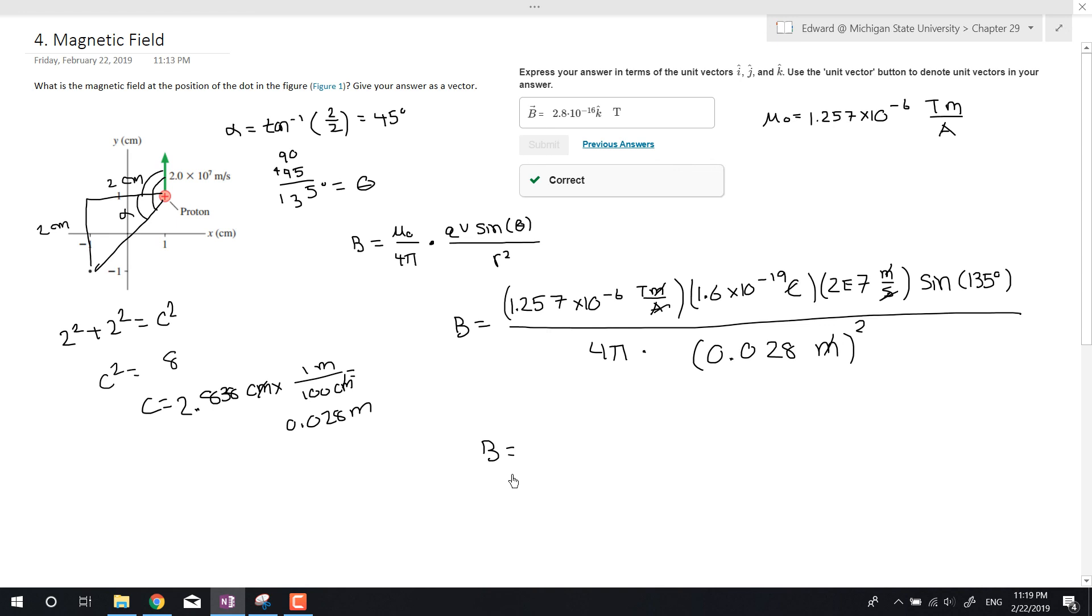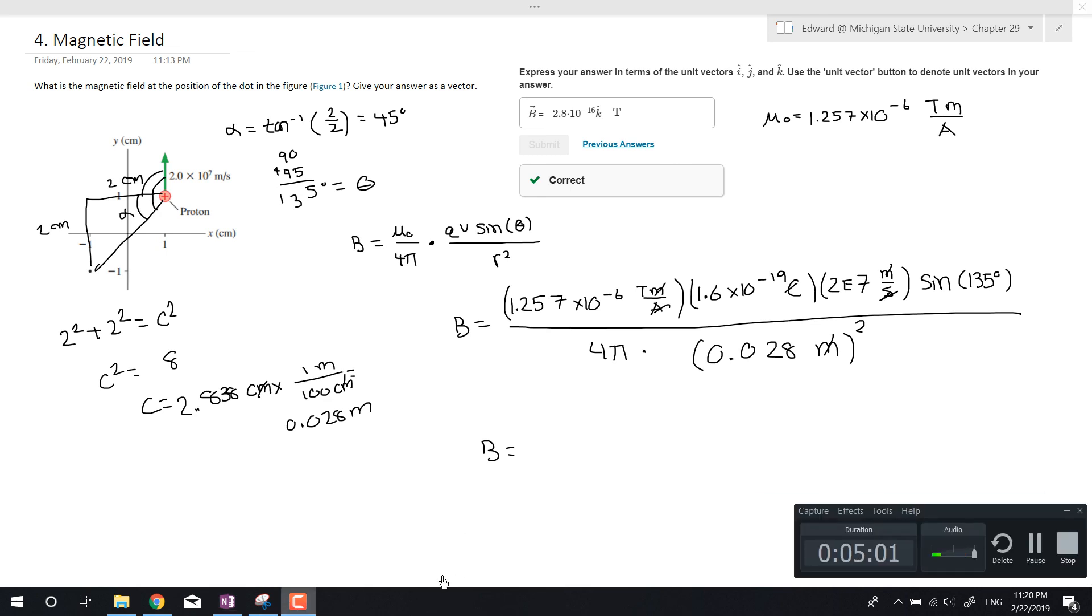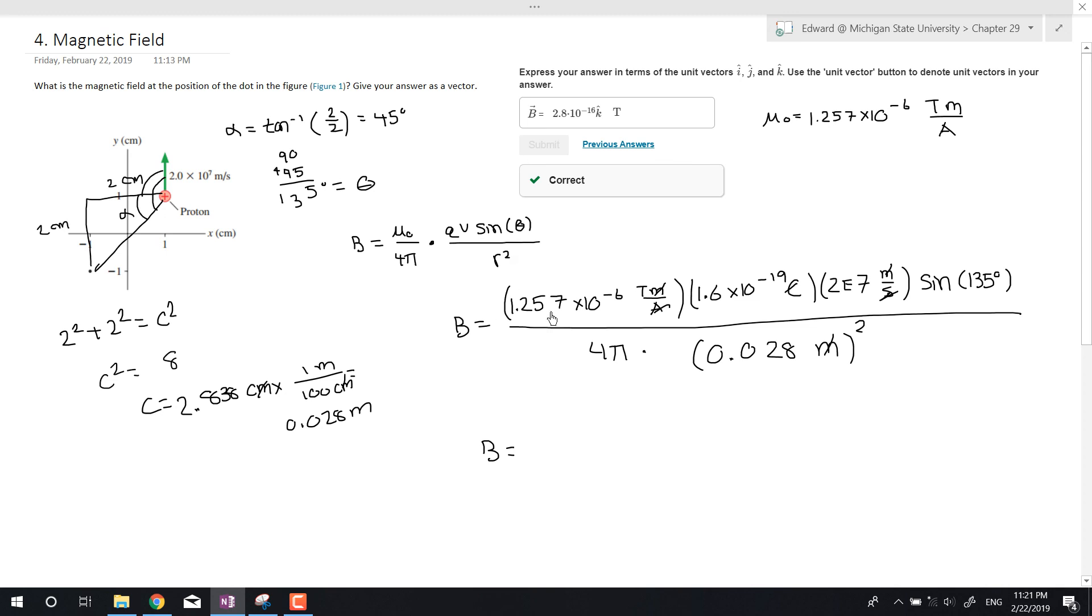So now if I were to type this on the calculator, bear with me for a second. I didn't want you guys to wait for me to type that in. But anyways, if you punch this on the calculator, you should get 2.83 times 10 to the negative 16 tesla. So here's exactly what we have up here.